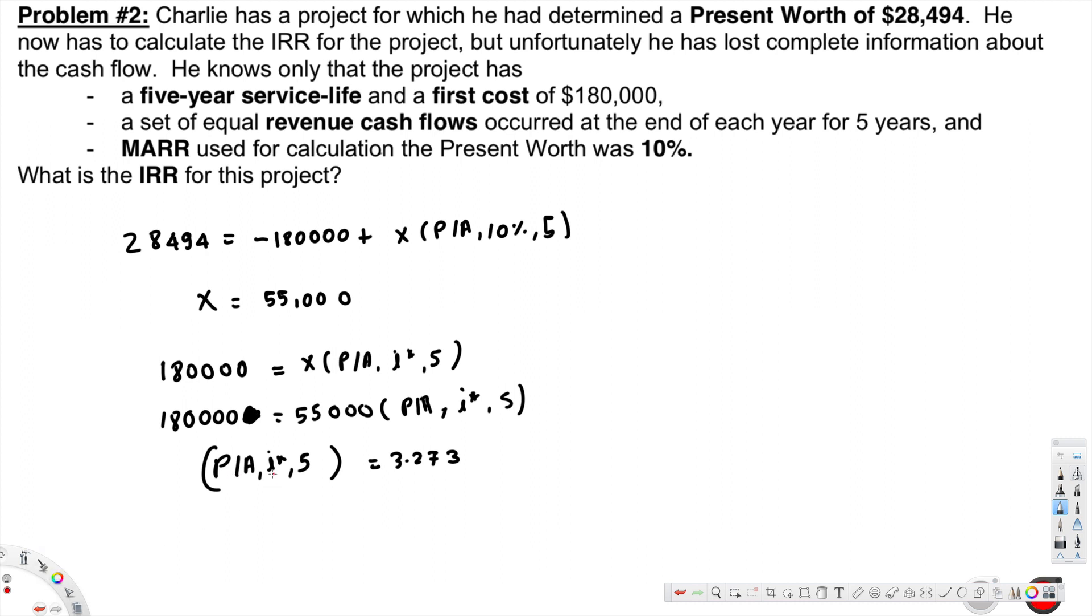If you look in the table, you will get (P/A,20%,5) equals 2.9906. Since this value is not exactly the same, we have to look at the above value as well.